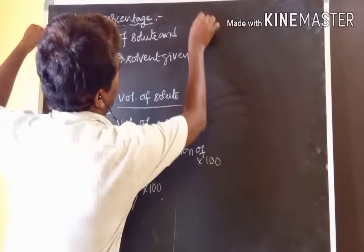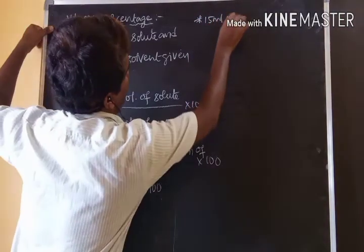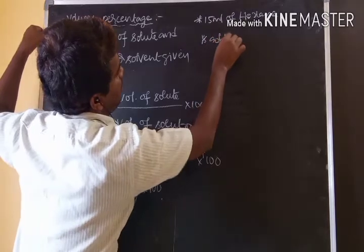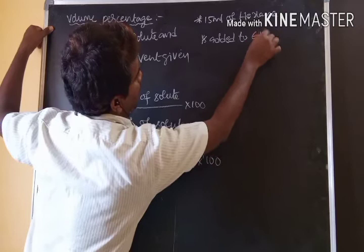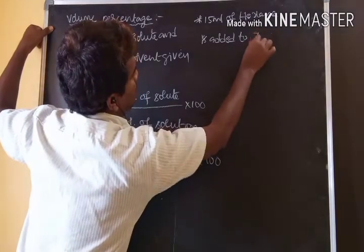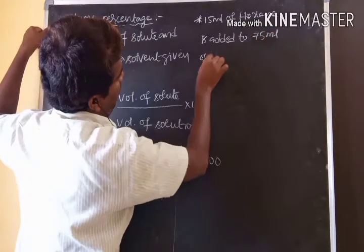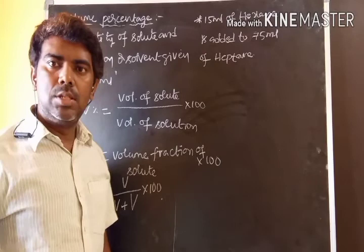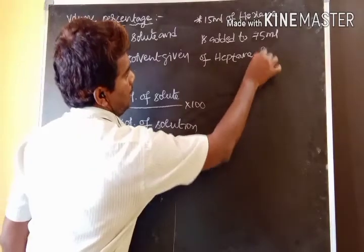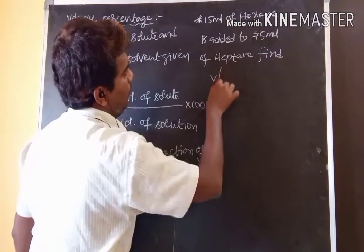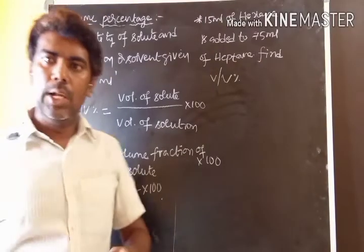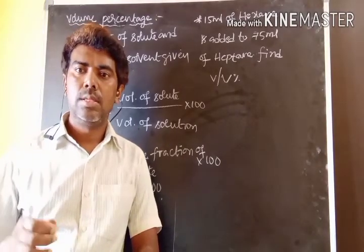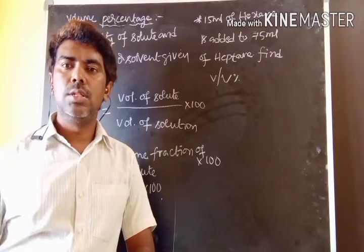Problem: 15 ml of hexane is added to 75 ml of heptane. Find the volume percentage. Here, the volume of solute and the volume of solvent are both given. Hexane (15 ml) is the solute, and heptane (75 ml) is the solvent. The volume of solution equals solute plus solvent.